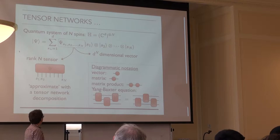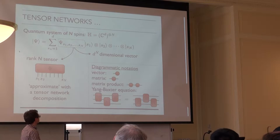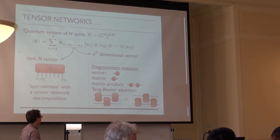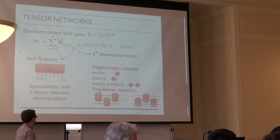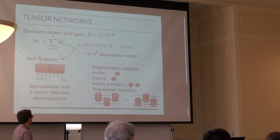Simple examples of this diagrammatic notation include a vector with a single index, a matrix, and when you connect indices between two objects it means a tensor contraction — in simple cases a matrix product. A more involved example is the graphical representation of the Yang-Baxter equation, where an R tensor implements a braid.